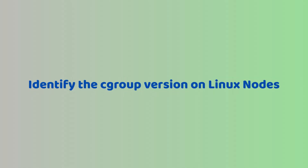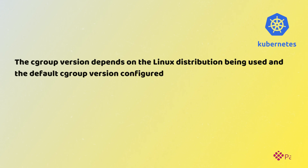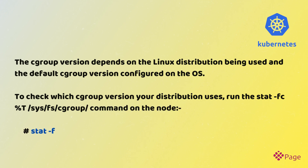To identify the CGroup version on Linux nodes: the CGroup version depends on the Linux distribution being used and the default CGroup version configured on the OS. To check which CGroup version your distribution uses, run the command `stat -fc%t /sys/fs/cgroup` on the node.